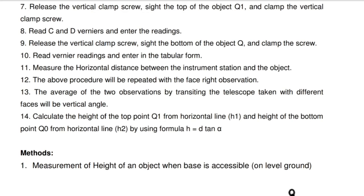10. Read vernier readings and enter in the tabular form. 11. Measure the horizontal distance between the instrument station and the object. 12. The above procedure will be repeated with the face right observation. 13. The average of the two observations by transiting the telescope taken with different faces will be vertical angle.